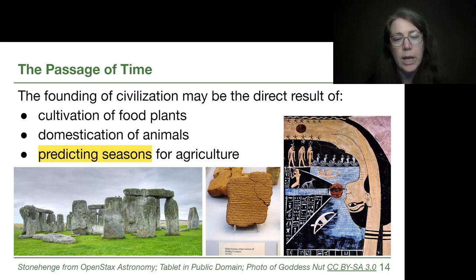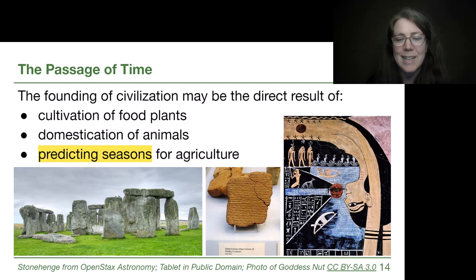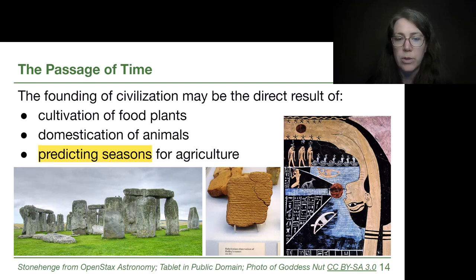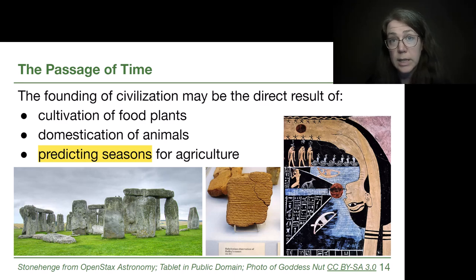On the far left we have an image of Stonehenge, which we will talk about in its calendar context. In the middle are cuneiform tablets — these particular ones are observations of Halley's Comet — and on the far right an Egyptian goddess Nut, who represents the sun rising and setting. Astronomy is playing a role in all of these ancient civilizations, both for timing harvests and for predicting common weather events like the flooding of the Nile.